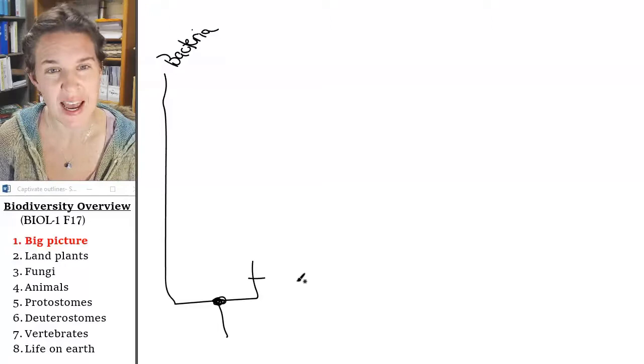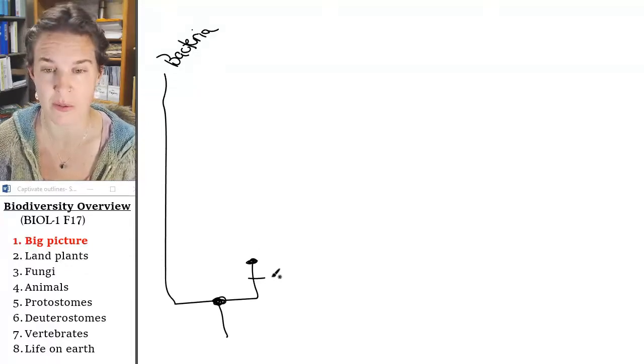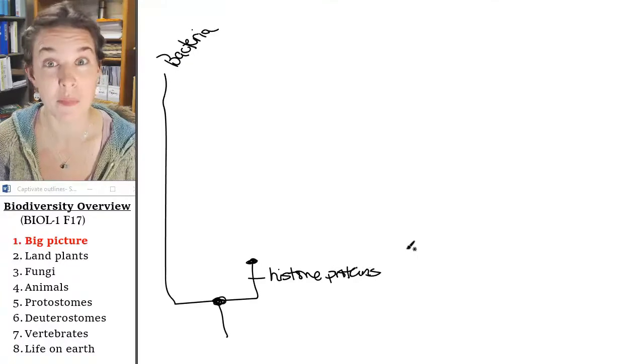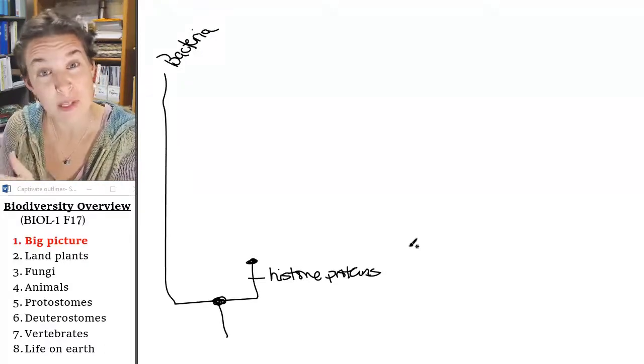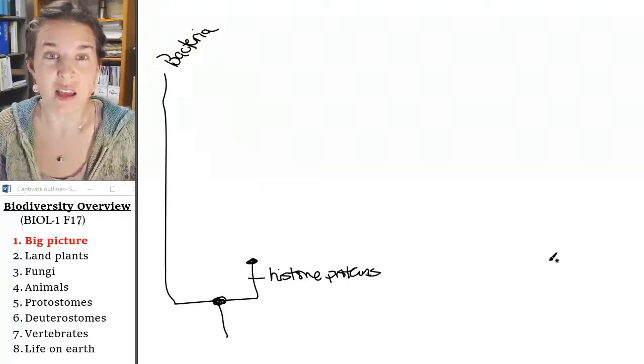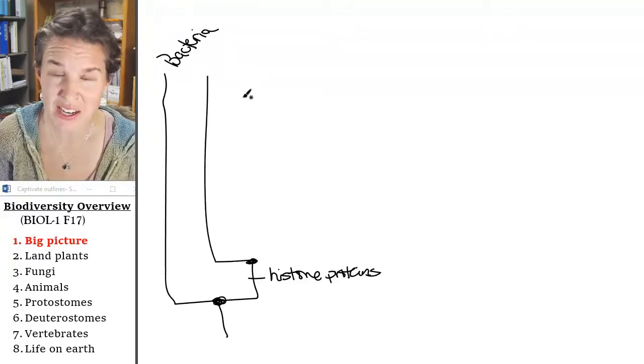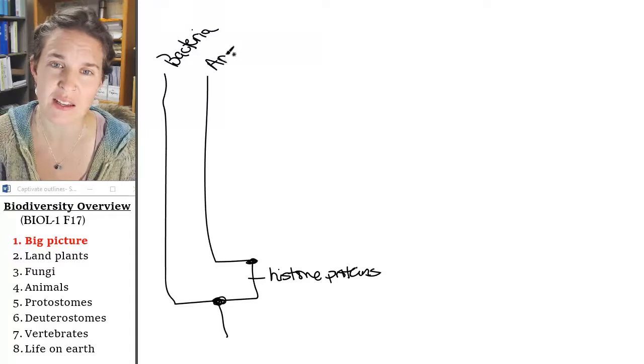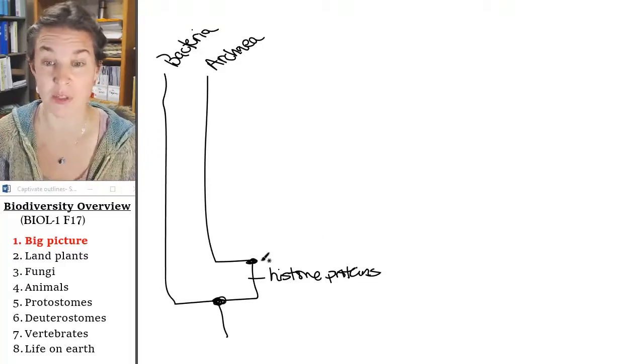Everything else had what characteristic? These guys all share the character of histone proteins. The histone proteins were those proteins that the DNA winds around when DNA goes from chromatin tangle form to chromosome wound up log form. Bacteria have no histone proteins. Everybody else has them. The group that's very similar to bacteria, the only difference is that they have these histone proteins, and those are the Archaeans. The Archaeans were those bacteria-like critters that live in super extreme environments.